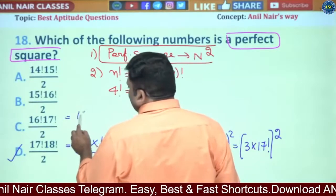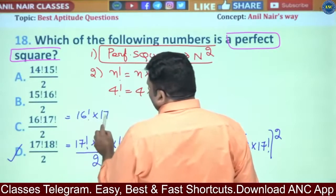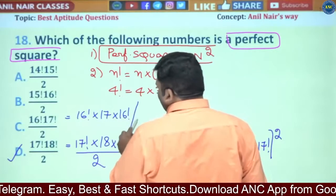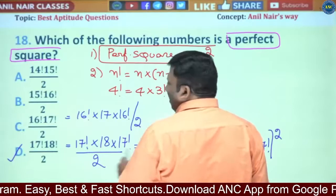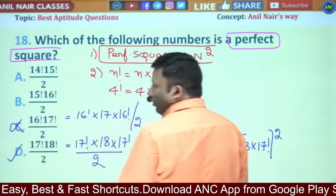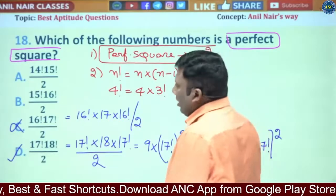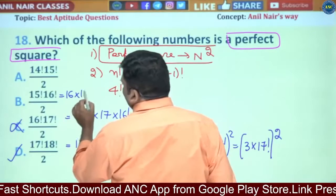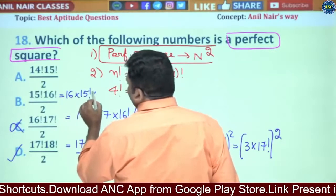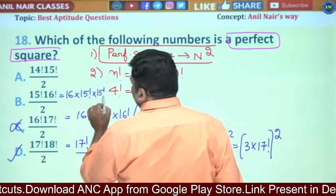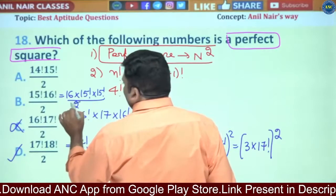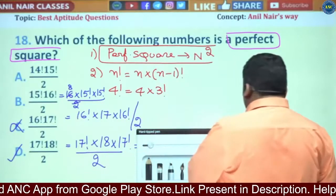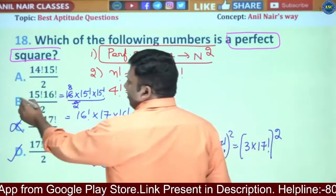For 16! × 17! / 2: this becomes 17 × (16!)² / 2. Since 17 is not divisible by 2, this is not possible. For 15! × 16! / 2: this gives 8 × (15!)², and a perfect square never ends with 2, 3, 7, or 8 — so this is not possible.